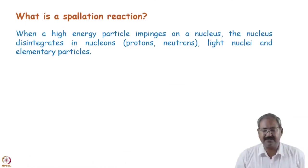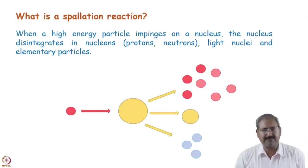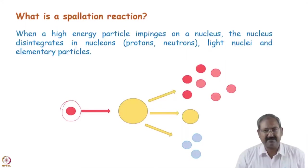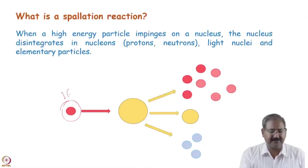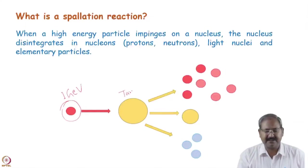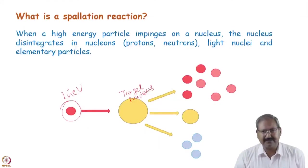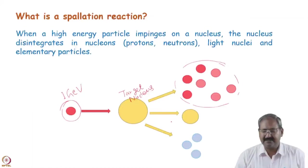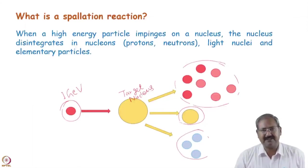When a high-energy particle impinges on a nucleus, the nucleus disintegrates into nucleons and light nuclear particles — this is spallation. In case of fission, the energy of the particles is low — either a thermal neutron or a fast neutron. In spallation it may be a 1 GeV proton impinging on the target nucleus, which may be a high-Z material or even uranium-238. A large number of neutrons and protons are ejected, and some light nuclei and other particles are also ejected as fragments. The basic difference from fission is that in fission large fragments are produced, whereas in spallation small fragments are produced and a large number of nucleons are ejected.